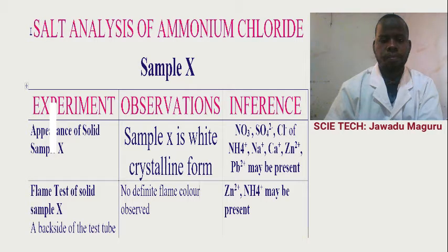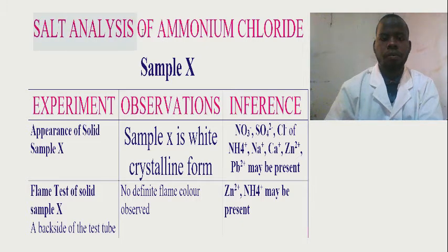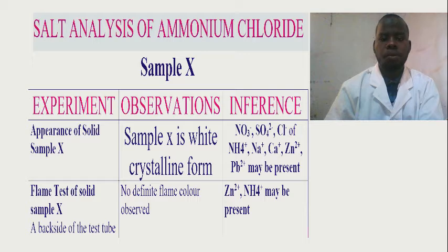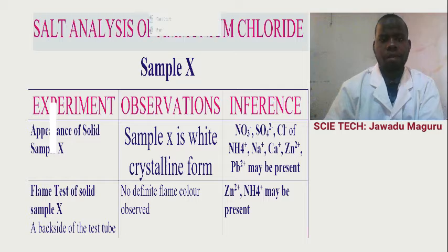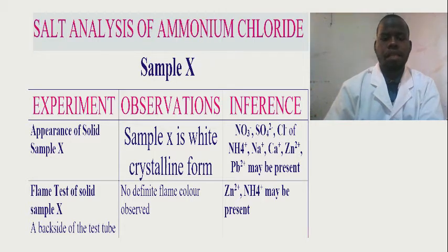So you are welcome. Today we proceed with another analysis of another salt sample. In qualitative analysis, we have different samples. For today we have another salt sample, which is a compound study. Today we will see the analysis of ammonium chloride. We are going to go through a guide sheet provided by NECTA, and then you will see how to write a report after testing, after making analysis by using reagents and a certain procedure.